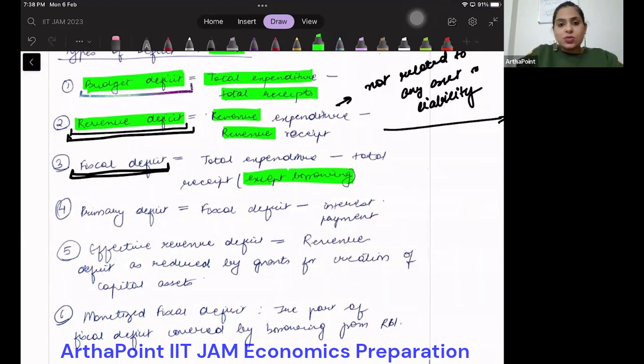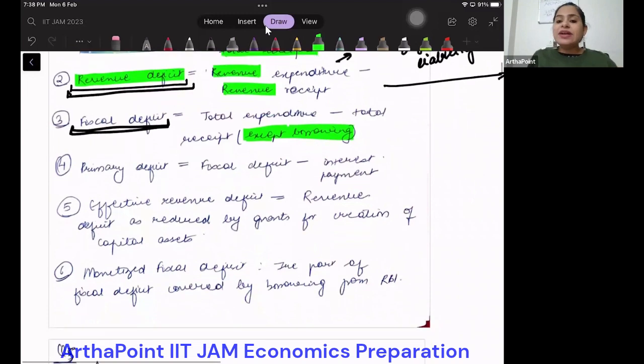The next one is primary deficit. Primary deficit is fiscal deficit minus interest payment. So I am not even including the interest that I am paying on any kind of debt. That is my primary deficit. This means that mainly this deficit is used for purposes other than paying interest on the borrowing. It gives me the true picture of my economy.